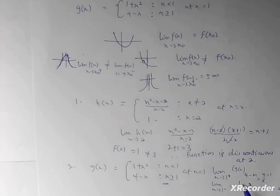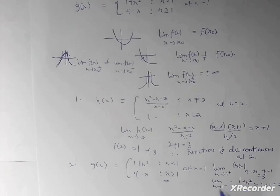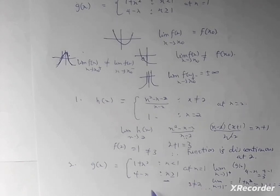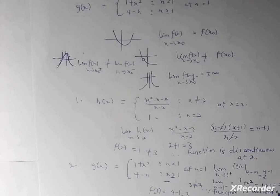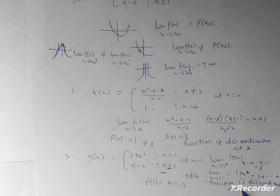The right-hand limit is 3 and the left-hand limit is 2. Since they are not equal, the limit itself does not exist. The functional value g(1), using the piece where x = 1, gives 4 − 1 = 3. But since the overall limit does not exist, the function is discontinuous at x = 1.